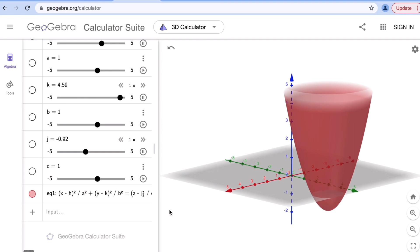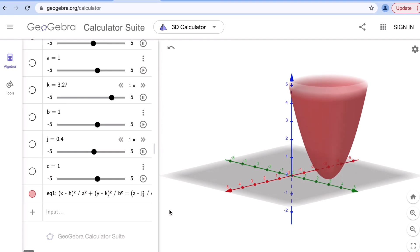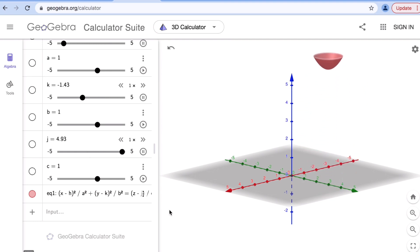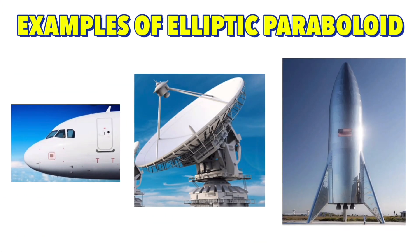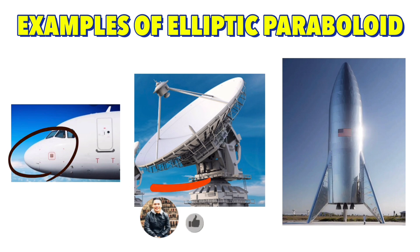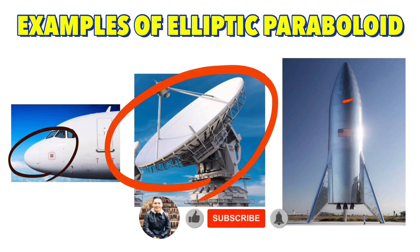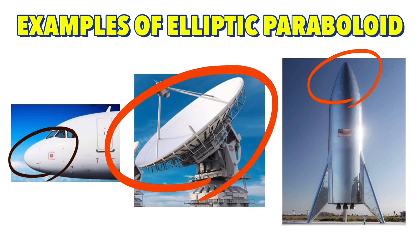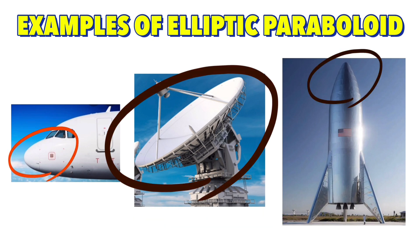Now let's look at some real-life examples that resemble an elliptic paraboloid. Examples we see around us include the nose of an airplane, a satellite dish, and the nose of a spaceship. What other examples of an elliptic paraboloid can you think of?